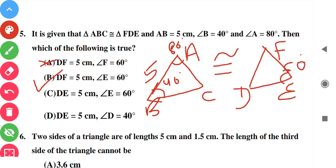DF equals AB because both are the starting sides of their respective triangles, so DF is 5. And angle E equals 60 degrees because by the angle sum property of a triangle, angle C is 60 degrees, and angle C is equal to angle E. So option B is correct.